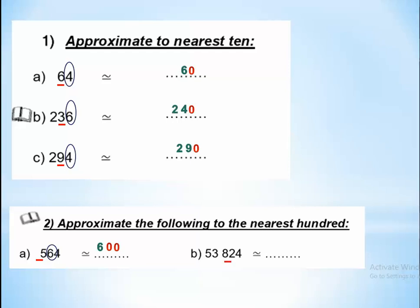Next example: underline 8 and circle the next-door digit — it is less than 4, so the number will not change. Keep 8 and replace the next-door digits with zeros.